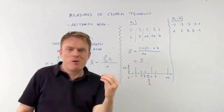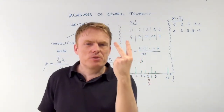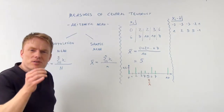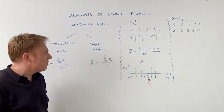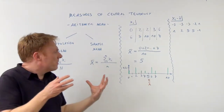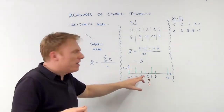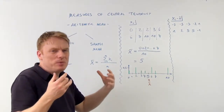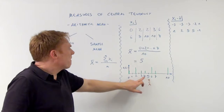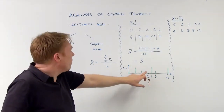Now, how can we interpret and understand the sample mean? There are two points that need observation. First of all, the sample mean is a point here in the middle. We could call it the middle, because 5 is somewhere inside all those values.